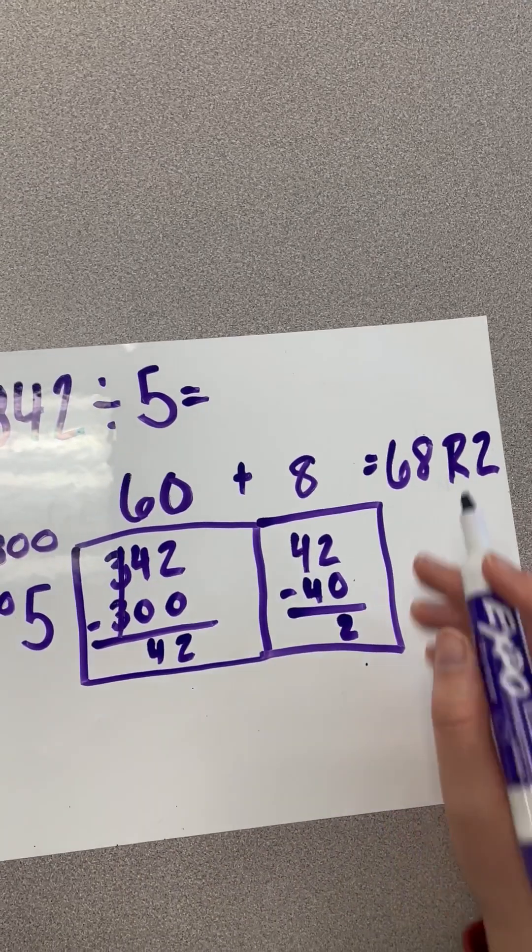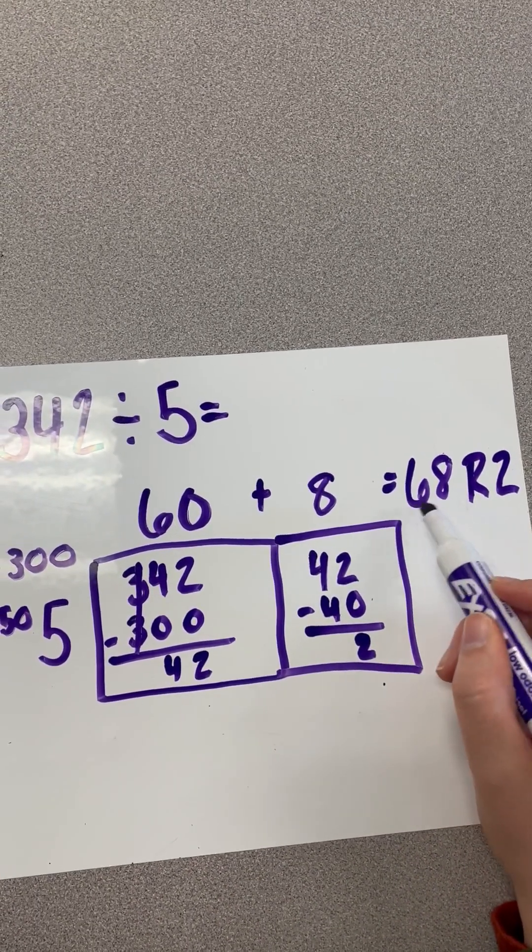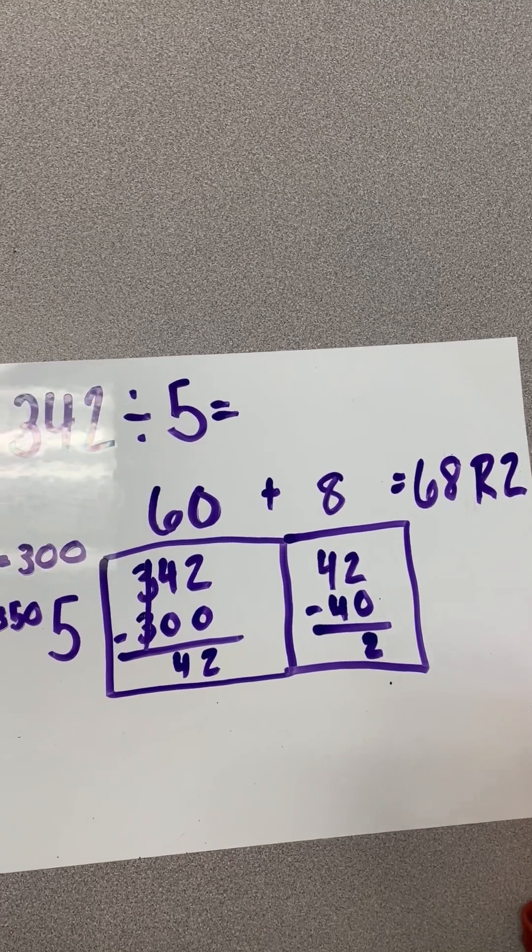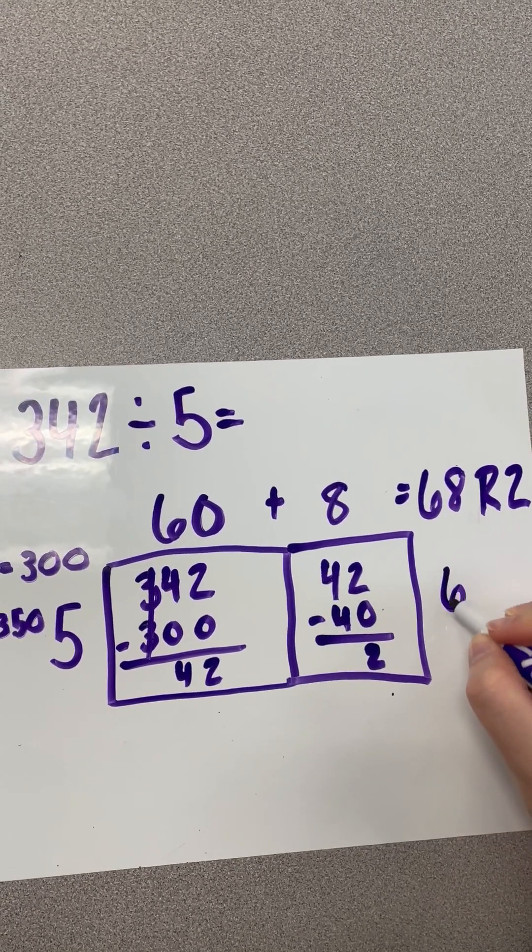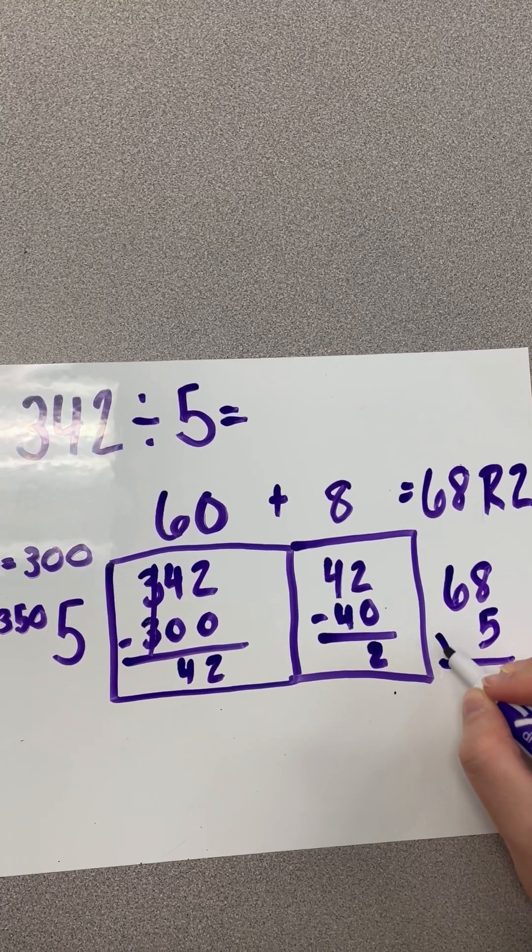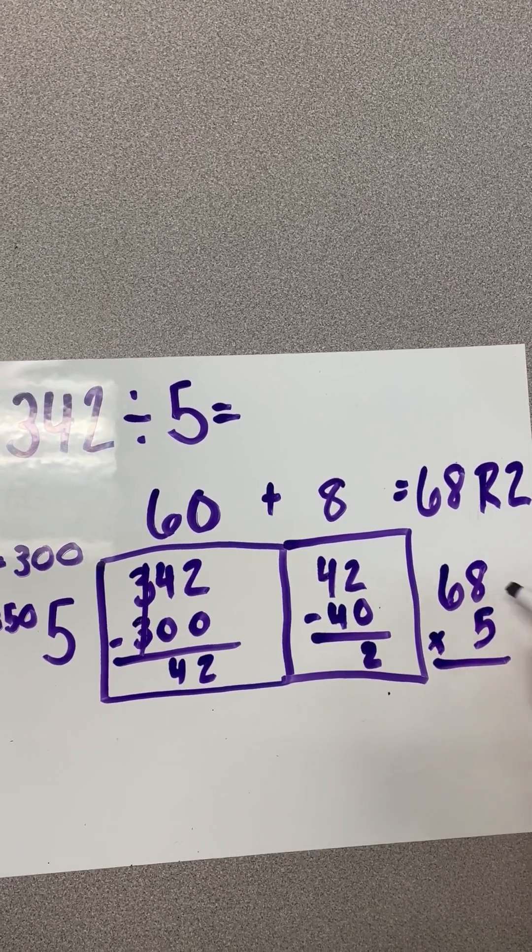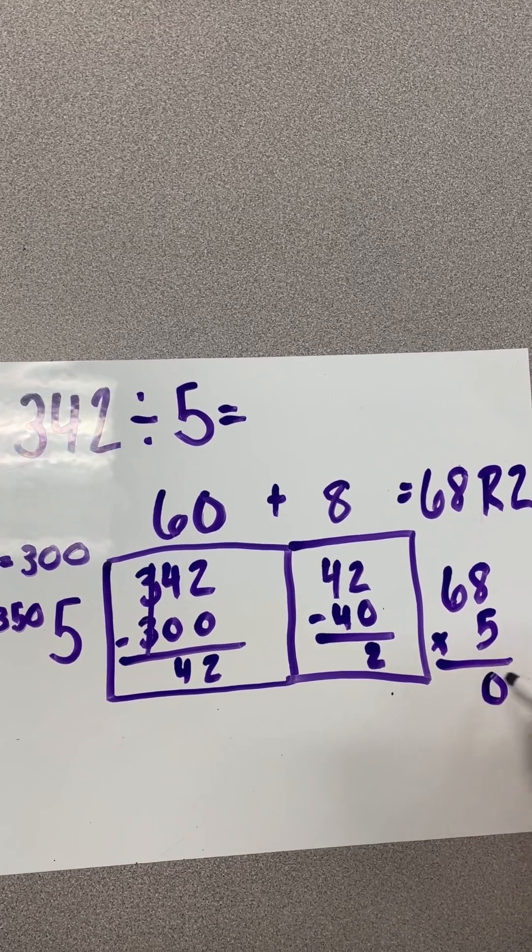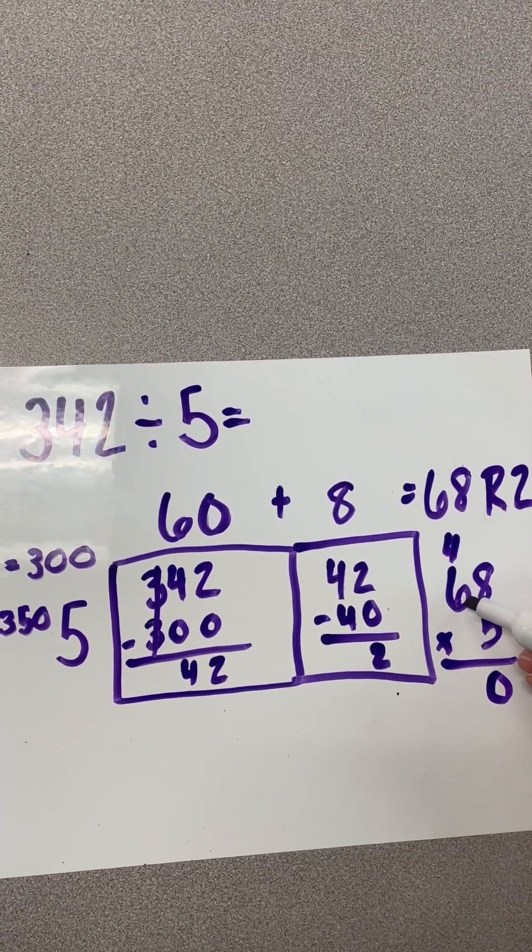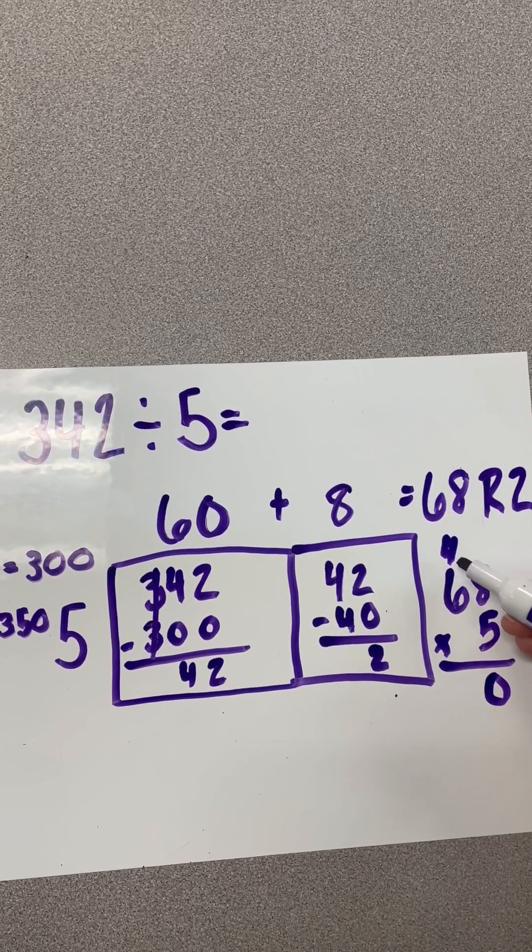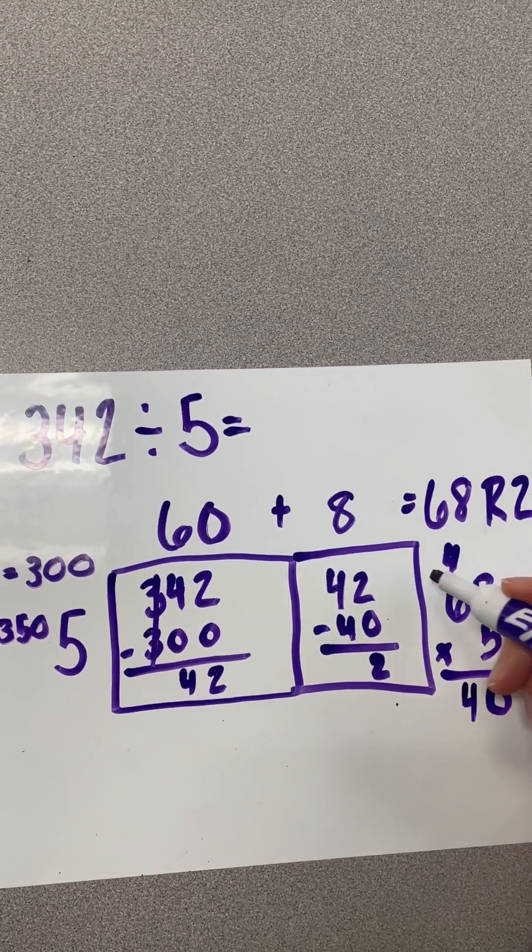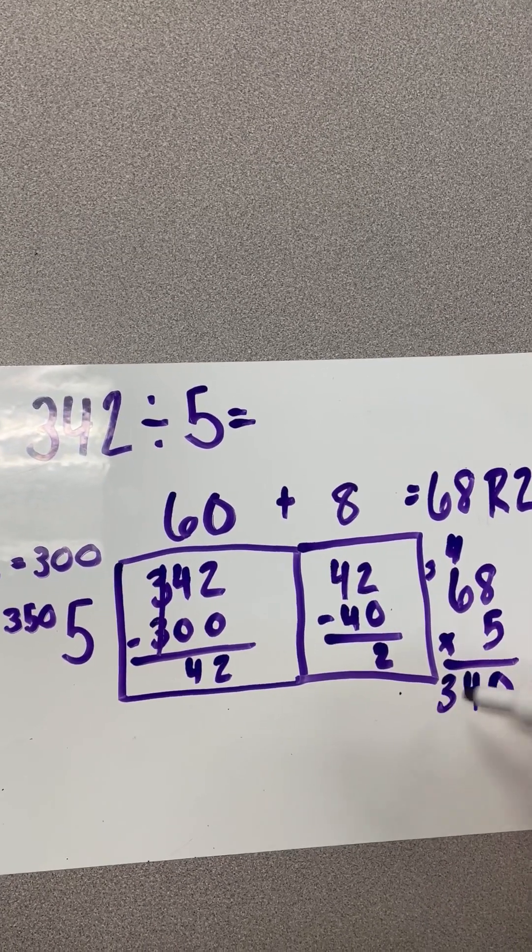When we check our answer with a remainder, we're going to only use our number first, and then we'll add the remainder at the end. So, let's check. We're going to do 68 times 5. We know 5 times 8 is 40, so I'm going to put a 0, carry that 4. 5 times 6 is 30, but I have to add that 4 back, and if I add 30 to 4, I get 34. And then I carry that 3, and I get 340.